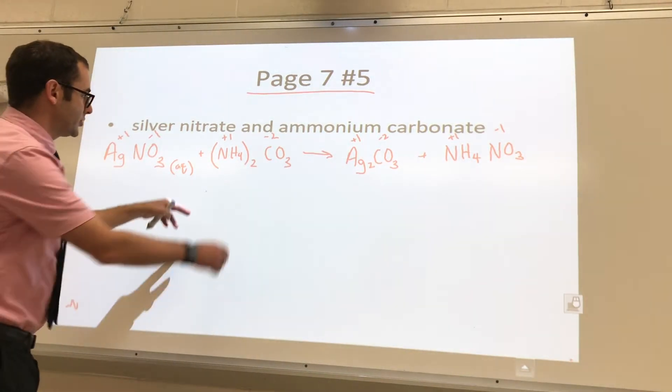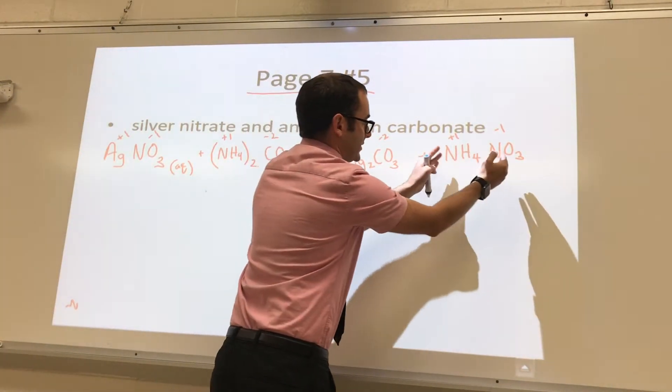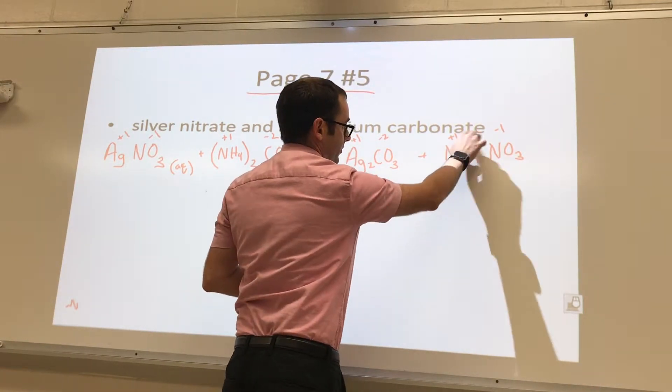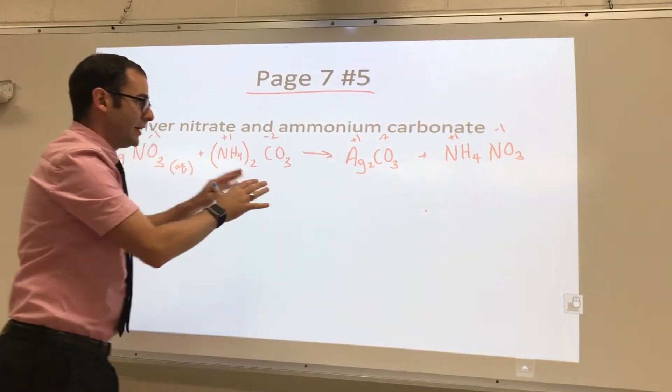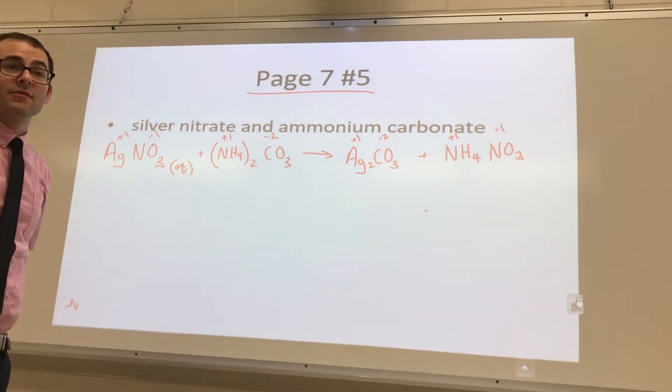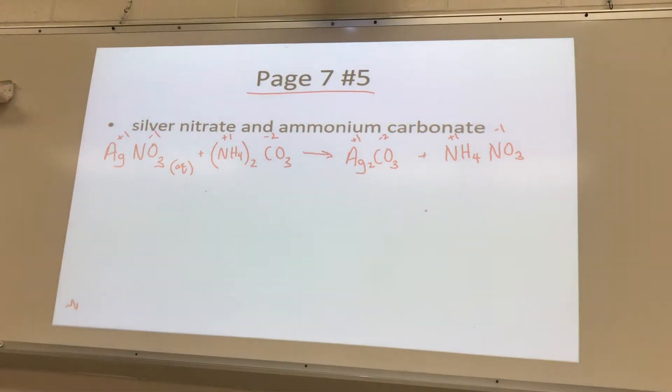Common question is, why didn't you bring over both of these? Because you're just balancing this little formula first, so that's why it's just one of each of them, because of the charges. Then we balance the whole thing, that's how we take into consideration everything. So to balance everything, where do we need some twos?